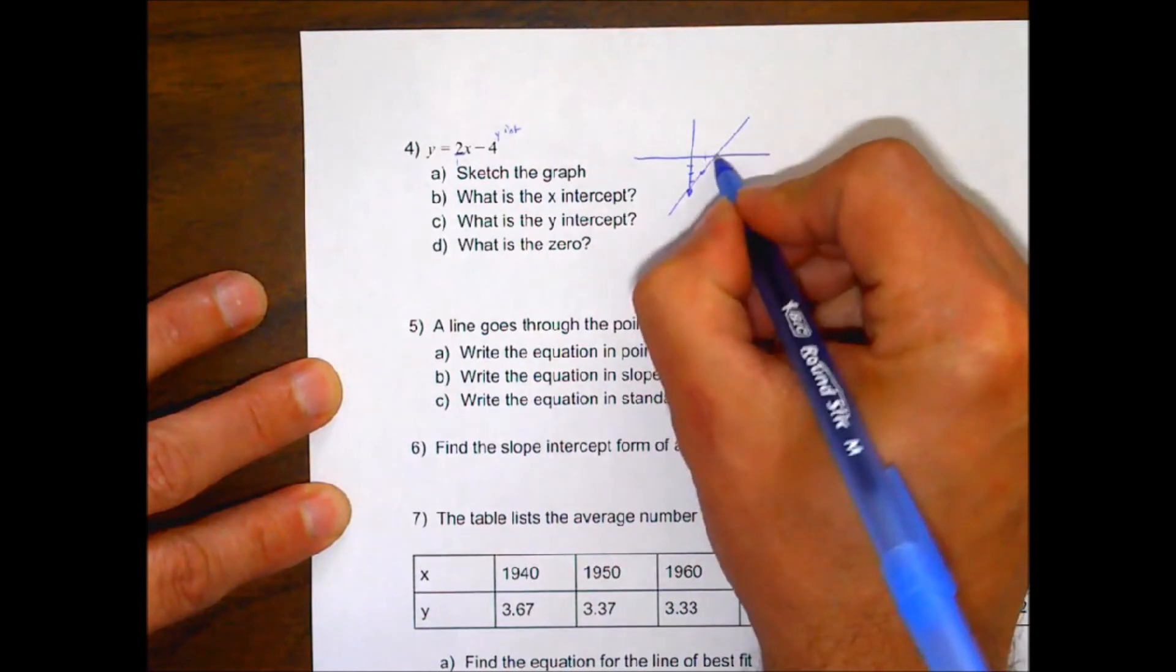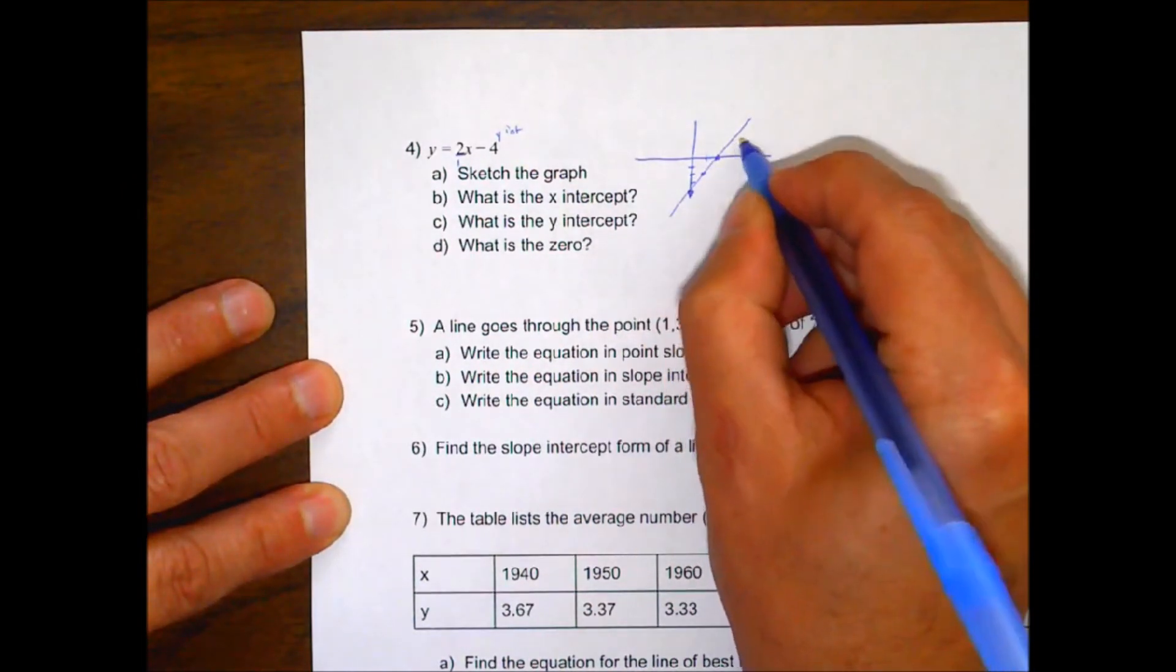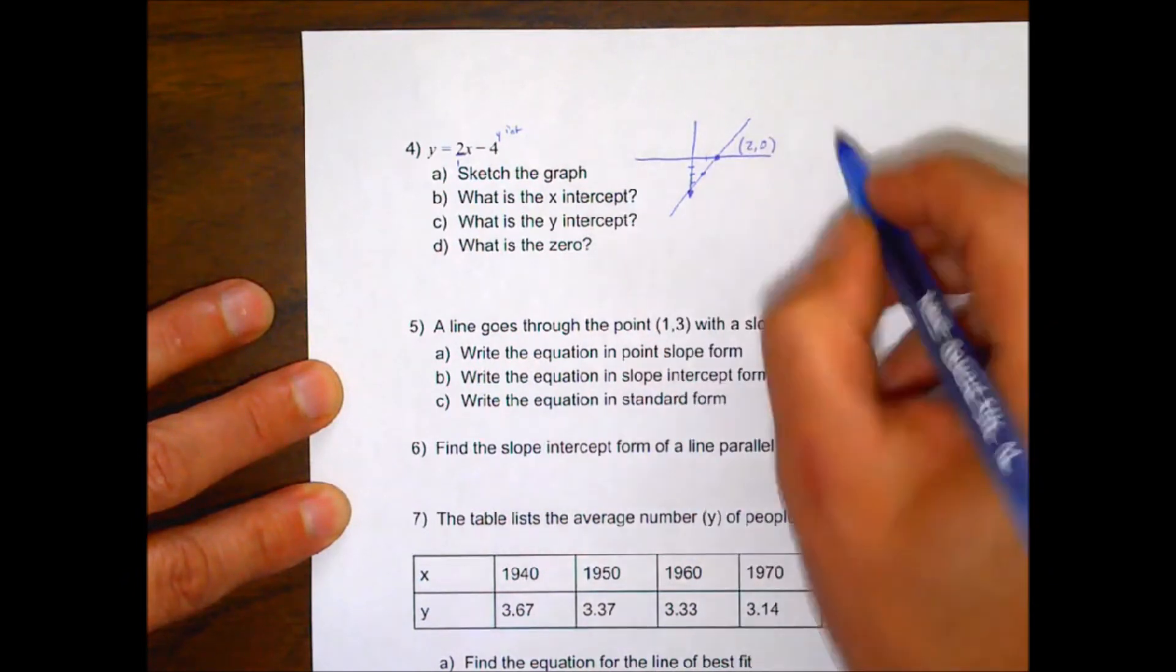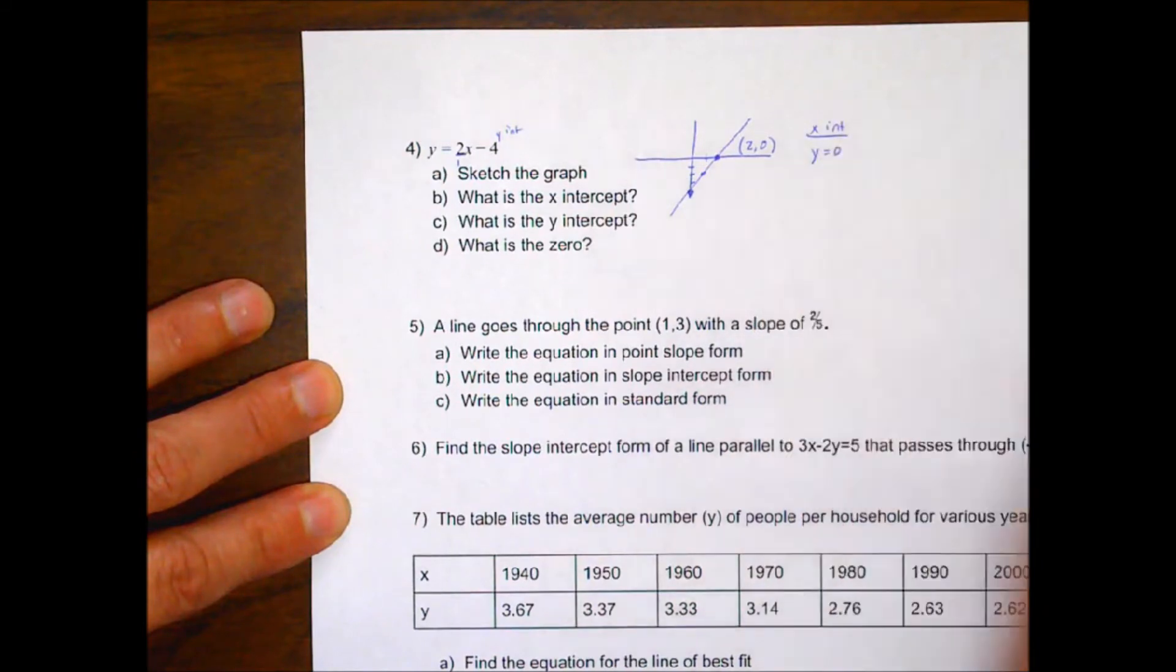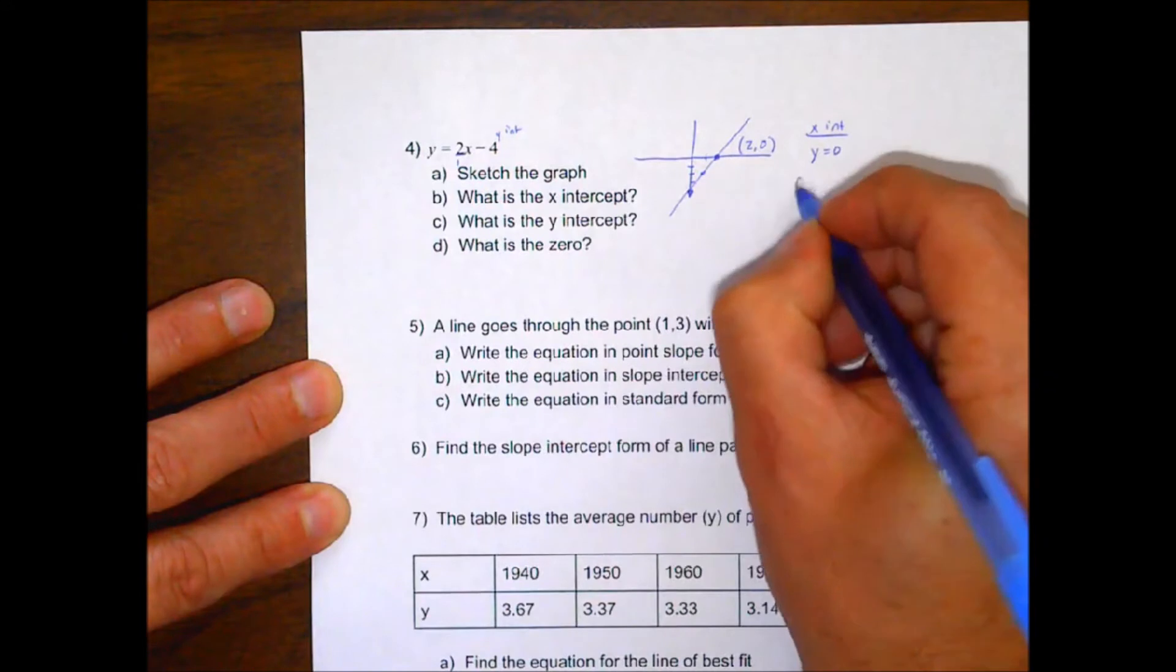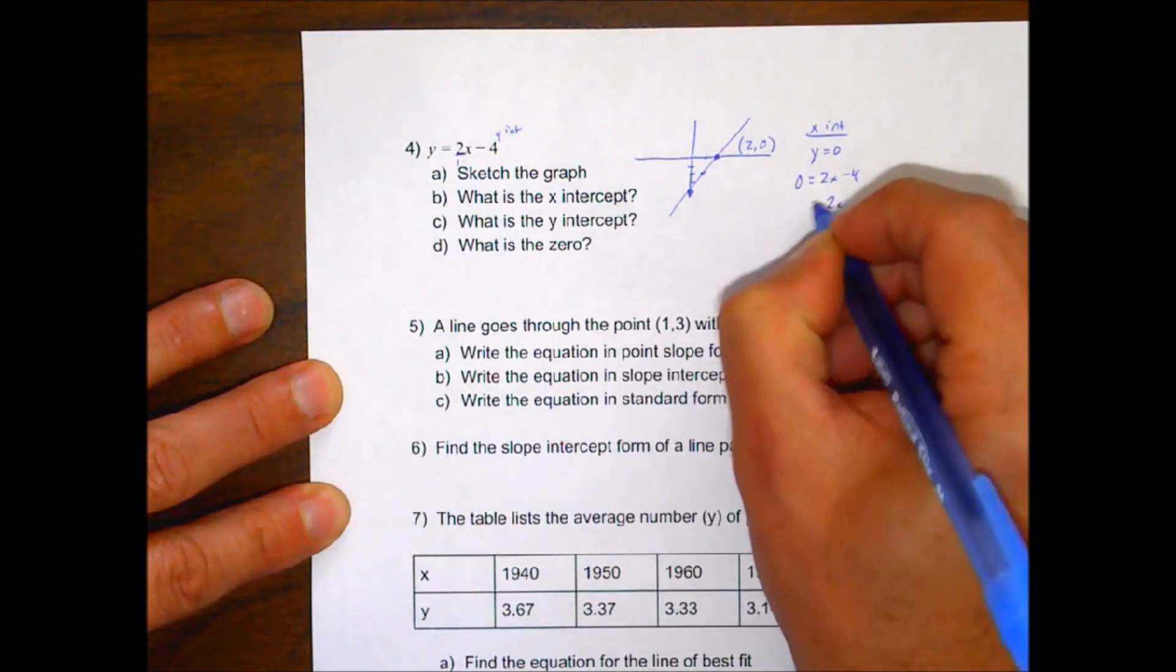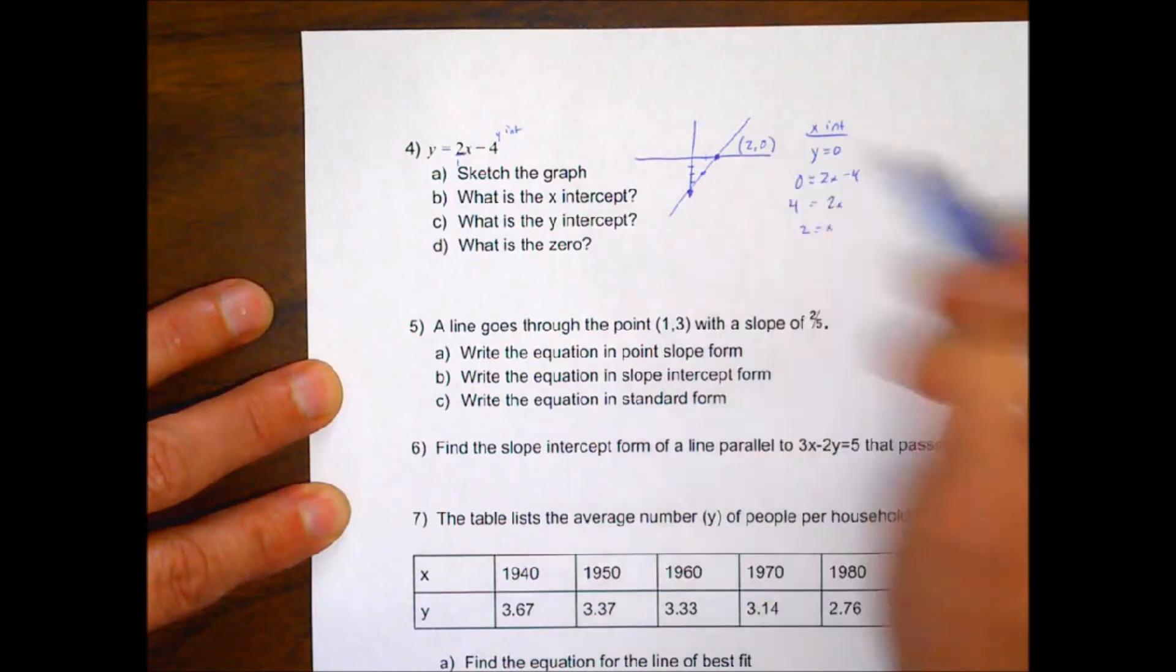Your x-intercept, you can find this two different ways. One, you can look at the graph that you just have here. And the x-intercept is at 2, 0 right there. The other way to do it, to find your x-intercept, you have to set your y equal to 0. So in your equation, you put a 0 in here. And you solve that. You add your 4 over and divide by your 2, you get x of 2. So you have your x-intercept as that 2, 0.